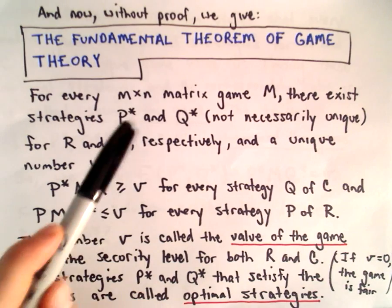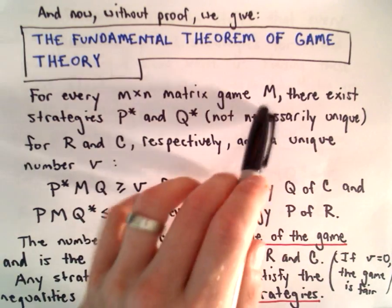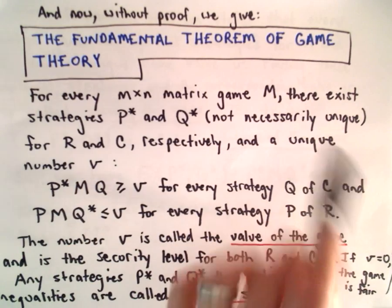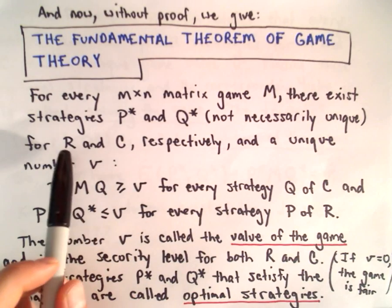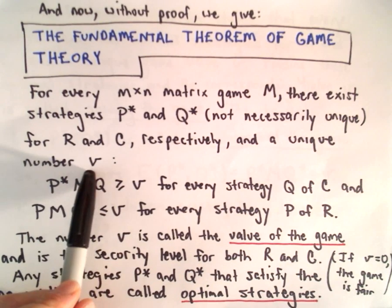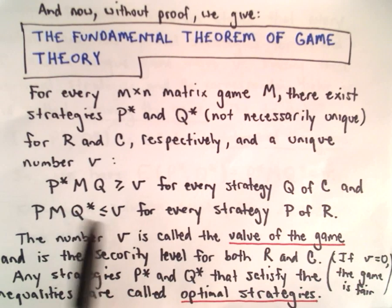So it says, for every M by N matrix game M, there exist strategies P* and Q*, not necessarily unique, for the row player and the column player, respectively, and a unique number V that satisfies the following two inequalities.